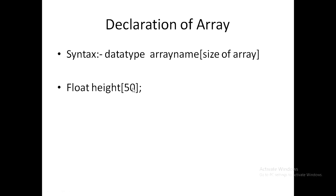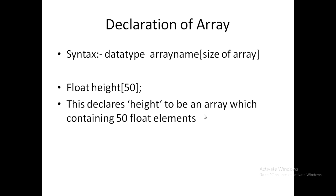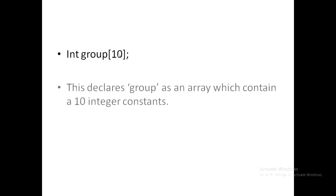For example, we can declare a float array called 'height' with 50 elements — this stores 50 float values. Another example is 'int group[10]', which declares 'group' as an array that can contain a maximum of 10 integer constants.